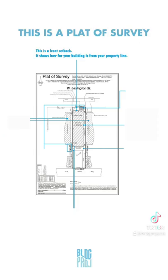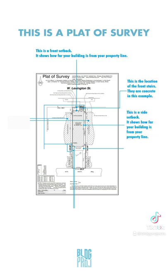This is a front setback — it shows how far your building is from your property line. This is the location of the front stairs; they are concrete in this example. This is a side setback; it shows how far your building is from your property line.